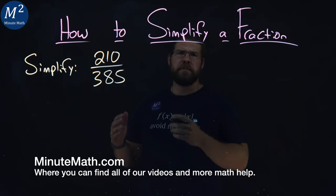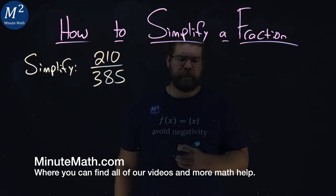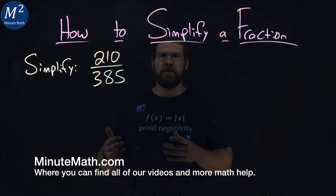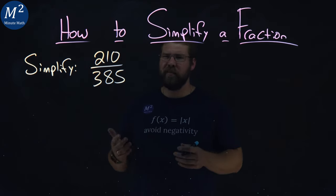We're given this problem here. We want to simplify 210 over 385. This is kind of a large fraction, so we want to break down the numerator and denominator to its prime factorization. Sometimes that can be the easiest.